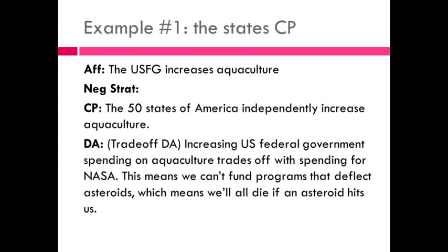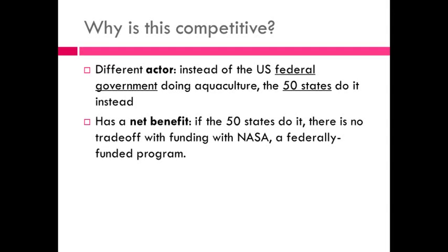So why is this competitive? First, it has a different actor — instead of the US federal government doing it, the counter plan says the 50 states should do it instead. And it has a net benefit: if the 50 states do it, there's no trade-off with NASA funding, which is a federally funded program. The net benefit is a disadvantage that links to the plan but not to the counter plan — it doesn't link to the counter plan because the states are not the federal government, but it links to the plan because it involves a funding trade-off within the federal government.